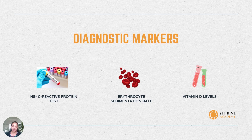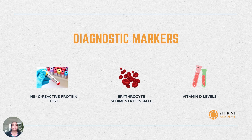It is always advisable to test for high sensitivity C-reactive protein, or HSCRP, because of its high accuracy. It can detect inflammation at its developing stage itself, and there are rare chances of misdiagnosis.